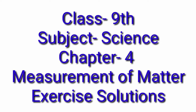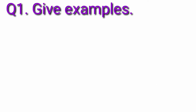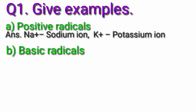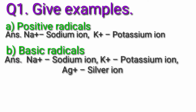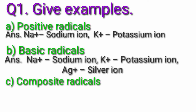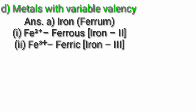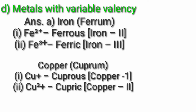Question 1: Give examples. A) Positive radicals — Na+ (sodium ion), K+ (potassium ion). B) Basic radicals — Na+ (sodium ion), K+ (potassium ion), Ag+ (silver ion). C) Composite radicals — SO4 2−, NH4+.